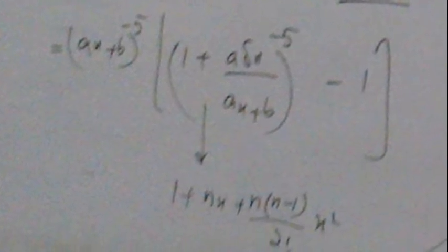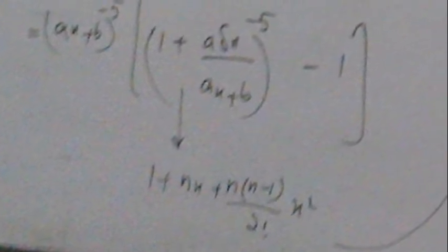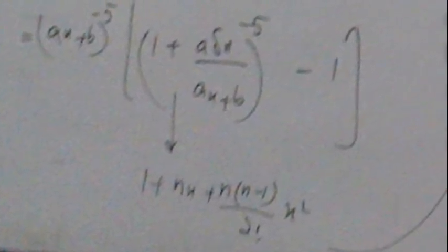And in this value with δx, we apply the formula 1 + nx + n(n-1)/2! x². We place n by -5 and x by aδx/(ax + b).